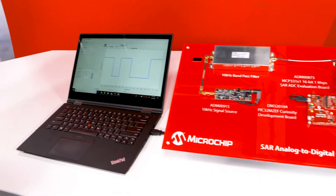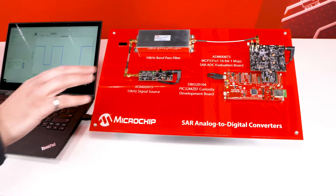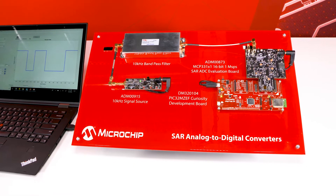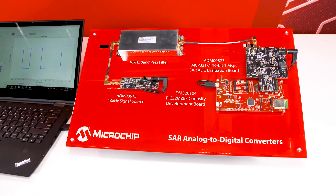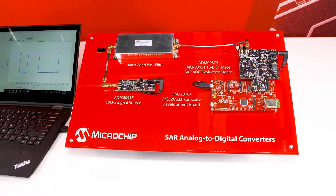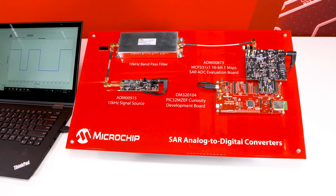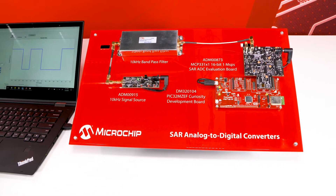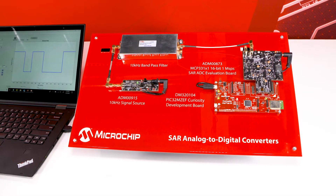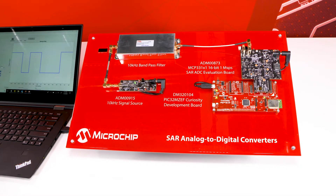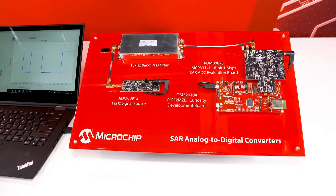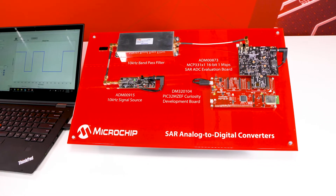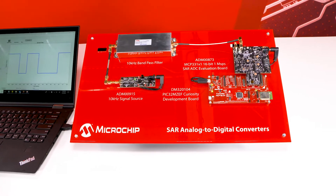The good news is that you can purchase the whole evaluation kit at our website. If you already have a curiosity board, you can just purchase our SAR ADC evaluation board. But if you don't have a curiosity board, I suggest purchasing the whole kit because it comes with a curiosity board and evaluation board, and the curiosity board is going to be pre-programmed with firmware to run this GUI.